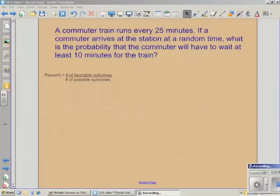Let's look at another problem. A commuter train runs every twenty-five minutes. If a commuter arrives at the station at a random time, what is the probability that the commuter will have to wait at least ten minutes for the train?